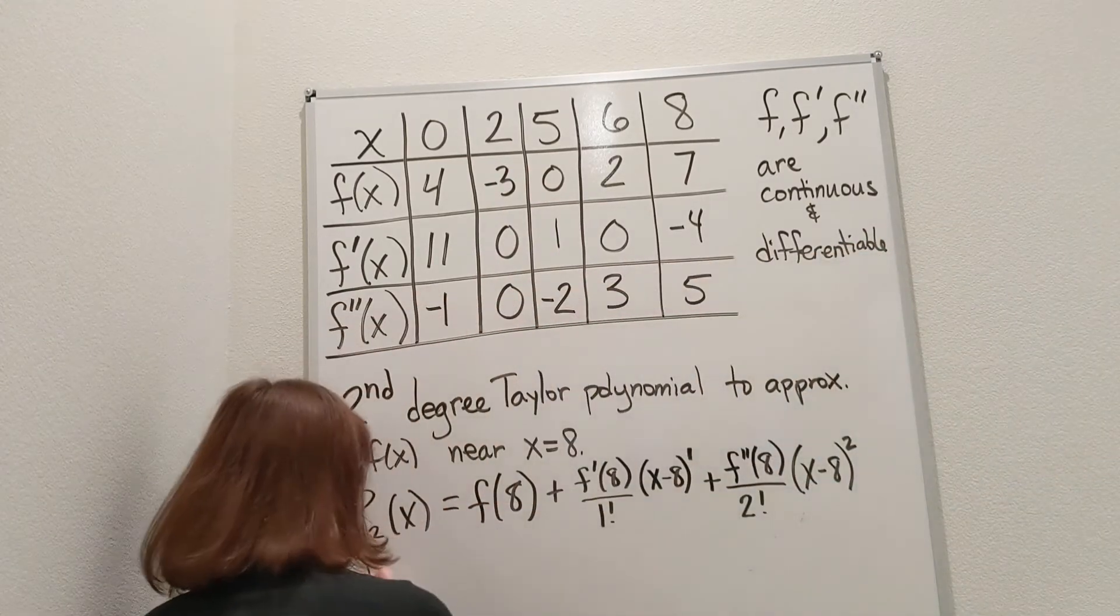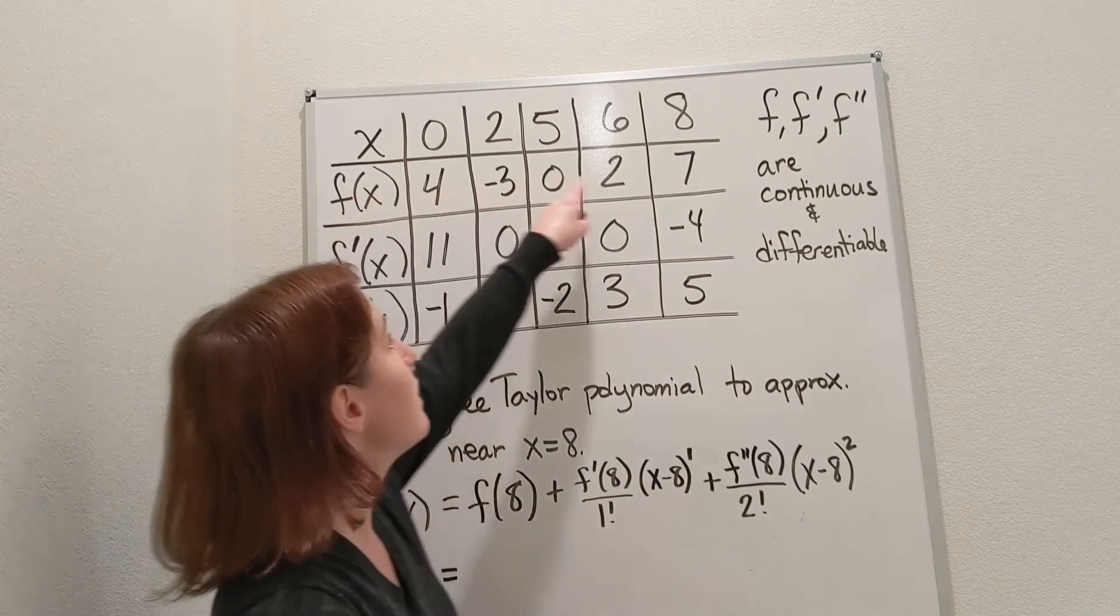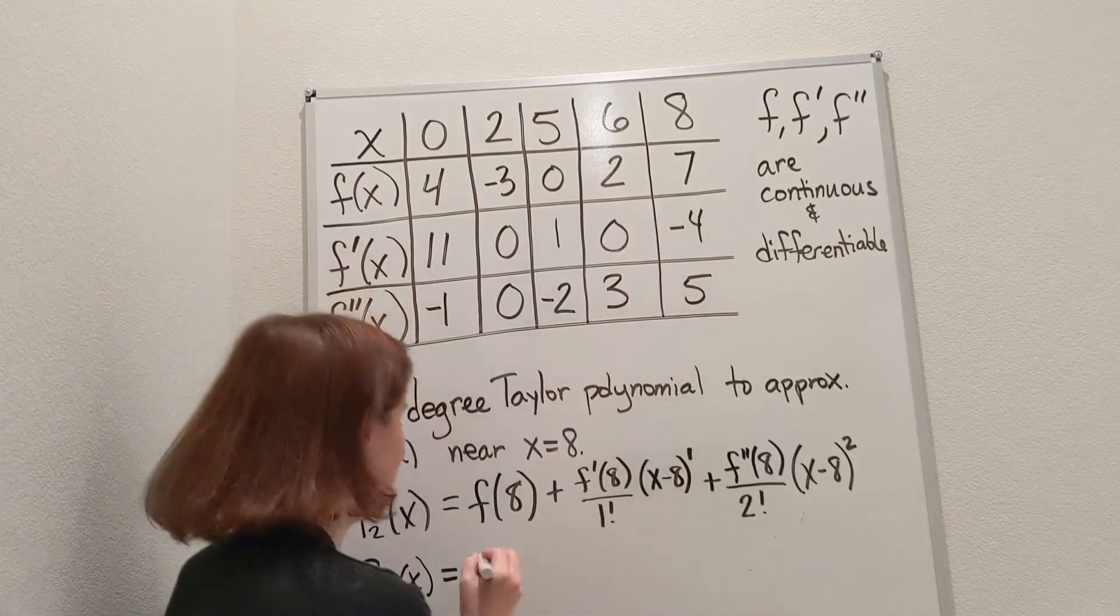So our p sub 2 of x. f of 8 is 7, let's put in the 7.